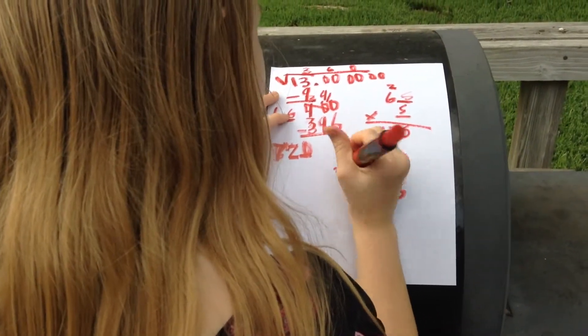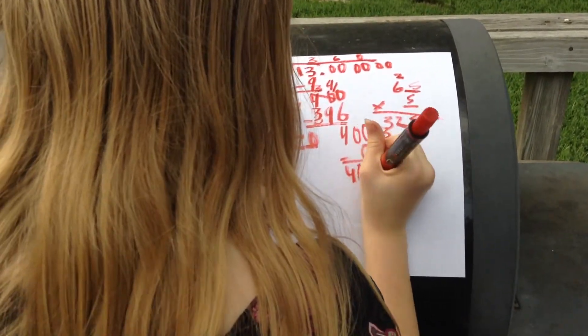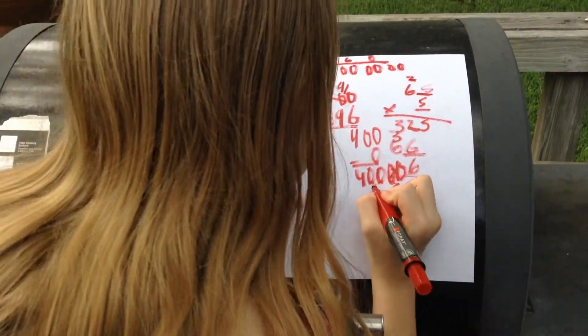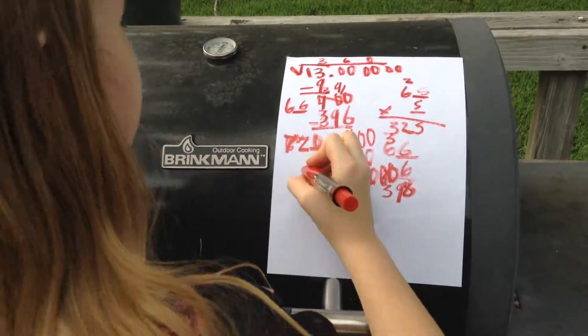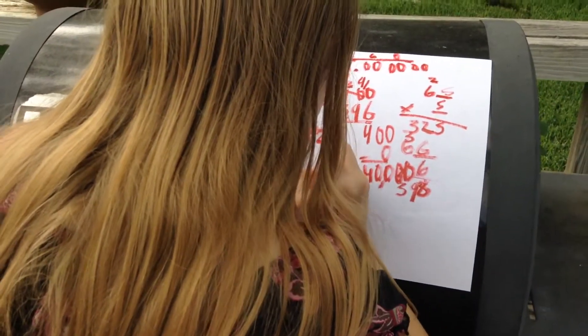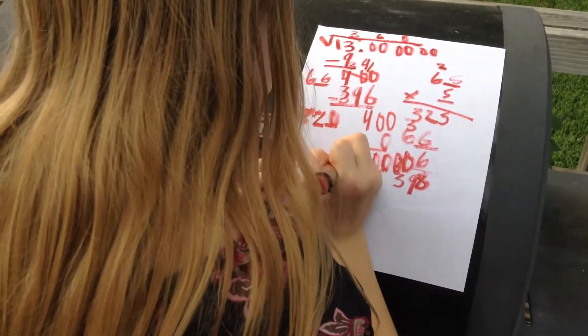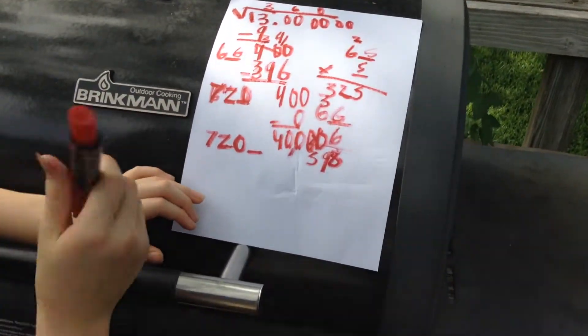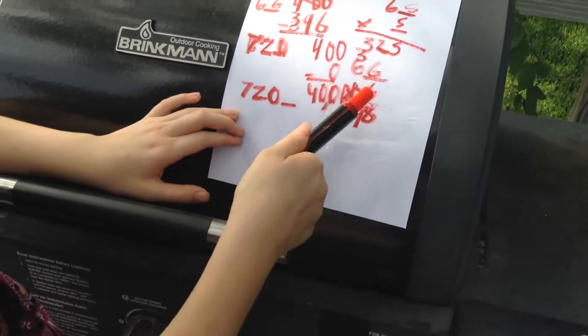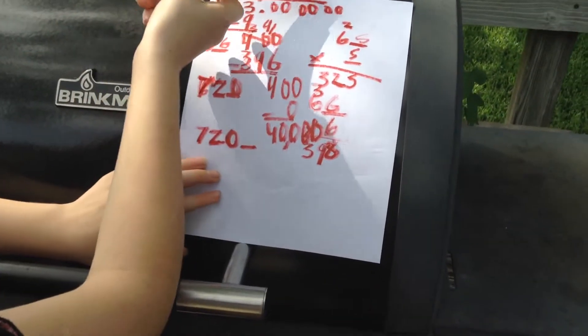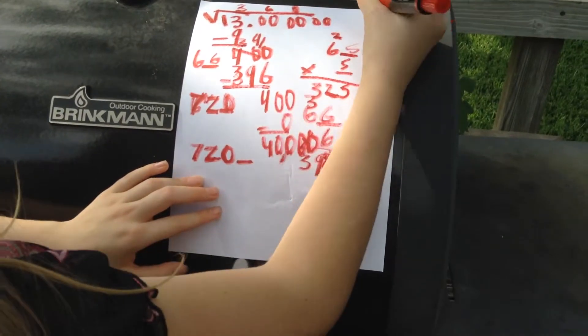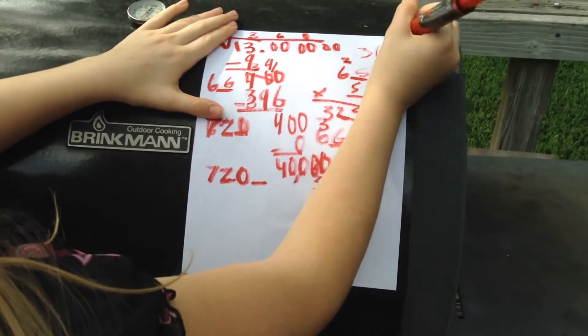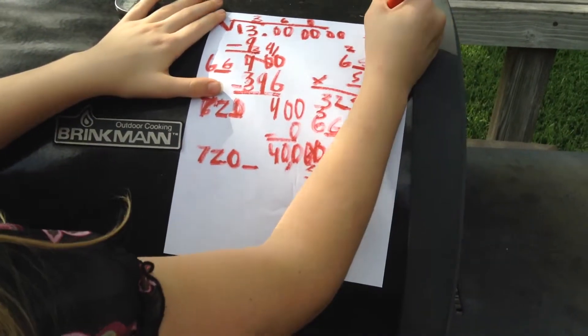Then this one is definitely higher than 5. So then we're done. And that's 1. So your answer is 3.601. And then to check, you have to multiply.